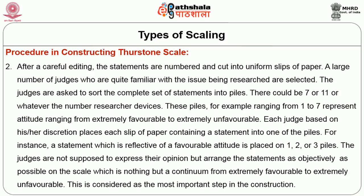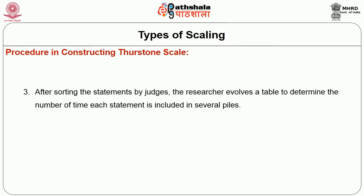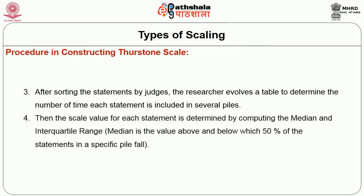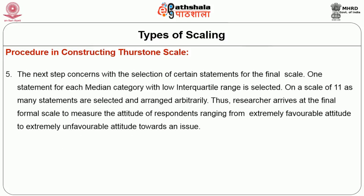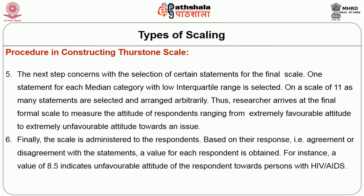Third, after sorting the statements by judges, the researcher evolves a table to determine the number of times each statement is included in several piles. Fourth, the scale value for each statement is determined by computing the median and interquartile range. Fifth, the next step concerns the selection of certain statements for the final scale — one statement for each median category with a low interquartile range is selected. On a scale of 11, as many statements are selected and arranged arbitrarily. Thus, the researcher arrives at the final formal scale to measure the attitude of respondents ranging from extremely favorable to extremely unfavorable attitude towards an issue. Finally, the scale is administered to the respondents, and based on their response — agreement or disagreement with statements — a value for each respondent is obtained.